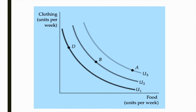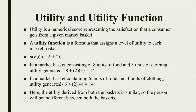In this case, the consumer provided relative rankings of market baskets. Now, suppose we assign numerical values to individual baskets. Utility is nothing but a numerical score representing the satisfaction that a consumer gets from a given market basket. For example, if buying a jeans makes you happier than buying a shirt, then we say that the jeans gives you more utility than the shirt.